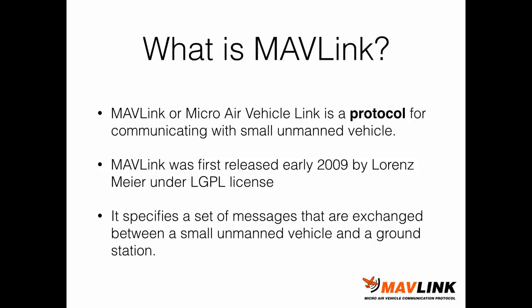The MAVLink Protocol is simply a communication protocol that allows an unmanned vehicle like a copter, a drone, or a rover to communicate with the ground station. The vehicle will send messages to the ground station that allow it to monitor status and follow the position of the vehicle. The ground station can also send messages to the vehicle to perform actions such as moving from one point to another. The MAVLink Protocol was first released in 2009 by Lawrence Mayer under the LGPL license. This protocol specifies a set of messages, their structures and formats, and how they are exchanged between the vehicle and the ground station.